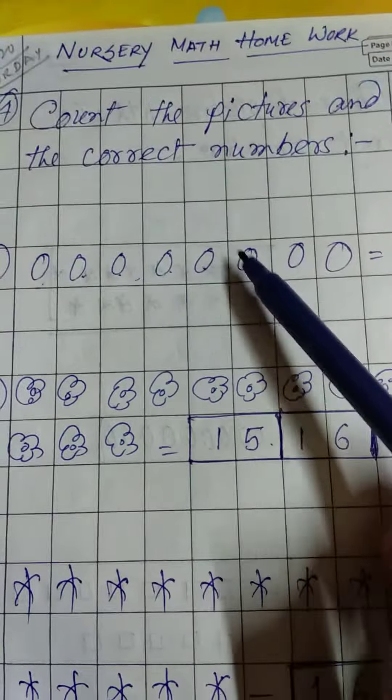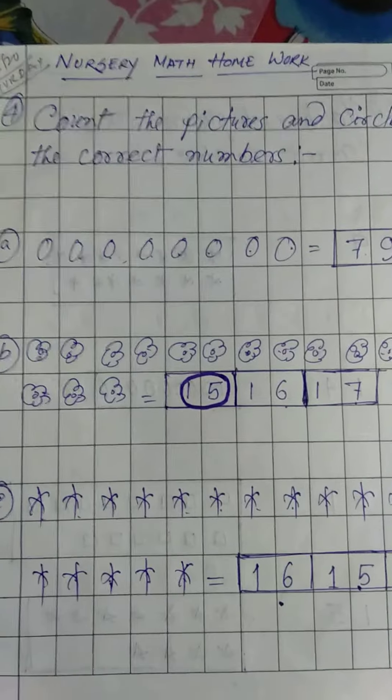Count 1, 2, 3, 4, 5, 6, 7, 8, 9, 10, 11, 12, 13, 14, 15, 16, 17. So here is 16, 15, 17. You have to circle 17. Okay, this is your homework. Thank you.